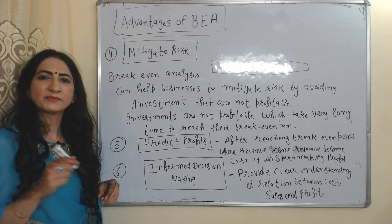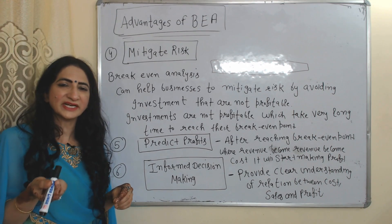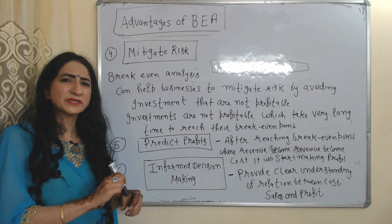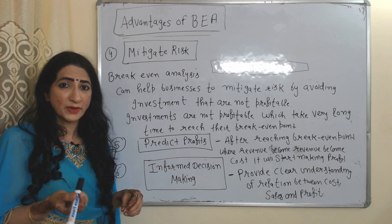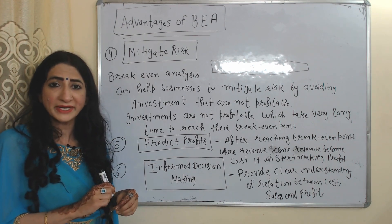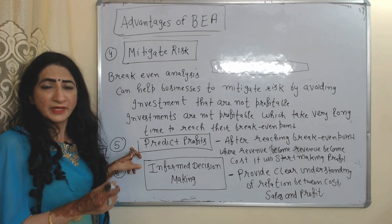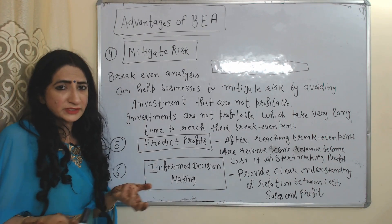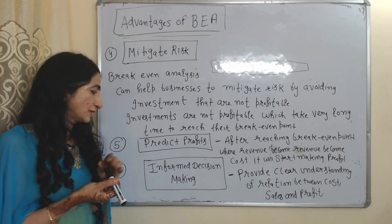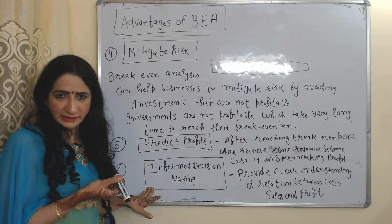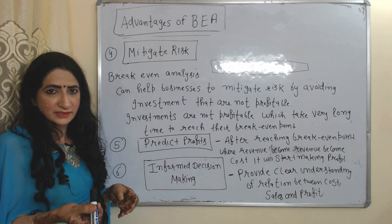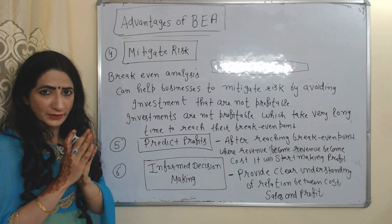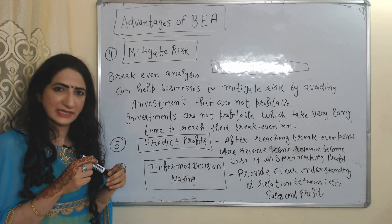The fourth advantage is mitigating risk — breakeven analysis helps businesses to mitigate risk by avoiding investments that are not profitable, specifically those that take a very long time to reach their breakeven point. Fifth, predicting profit — after the breakeven point, companies start making a profit, so breakeven analysis helps in predicting profit. Sixth, informed decision making — breakeven analysis helps businesses by providing a clear understanding of the relationship between cost, sales, and profit.